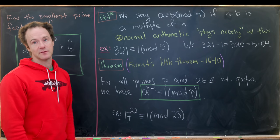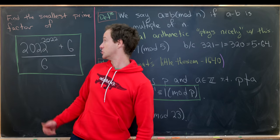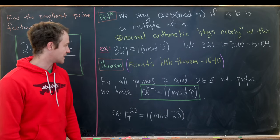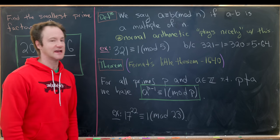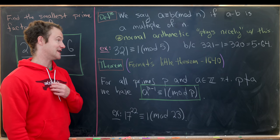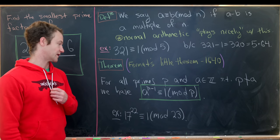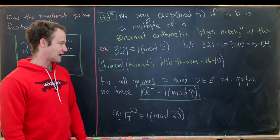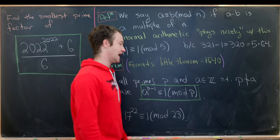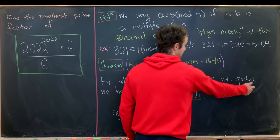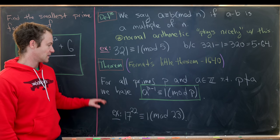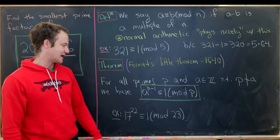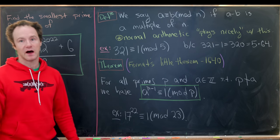Okay, so now here's the theorem that we'll use in order to come up with our solution. So it's called Fermat's little theorem, and it was originally stated in a letter in 1640. And it says, for all primes p and integers a, where p does not divide a, so in other words a is not a multiple of p, we have a to the p minus 1 is congruent to 1 mod p.